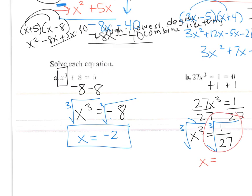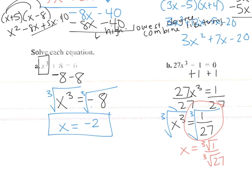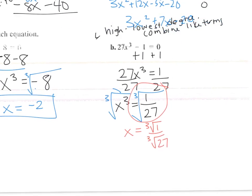But we can actually break that down. So I'm going to separate the cube root of 1 over the cube root of 27. Because both of those, you can take the cube root of and get a whole number. The cube root of 1 is 1. The cube root of 27 is 3. So the best answer is 1 third.